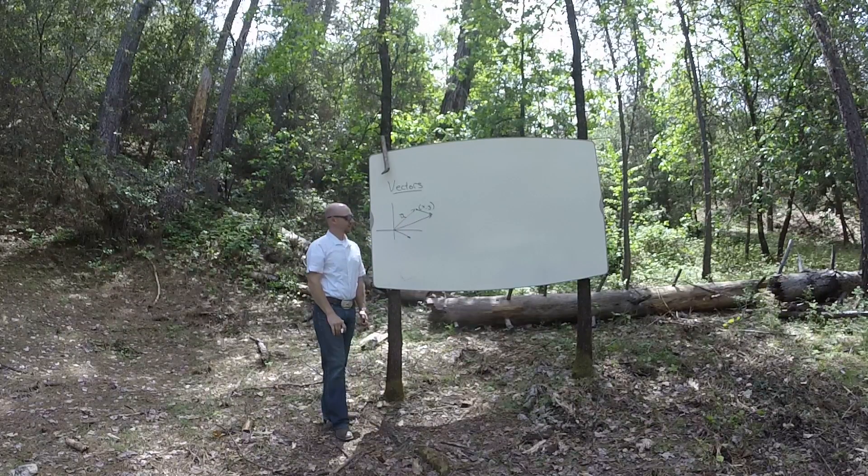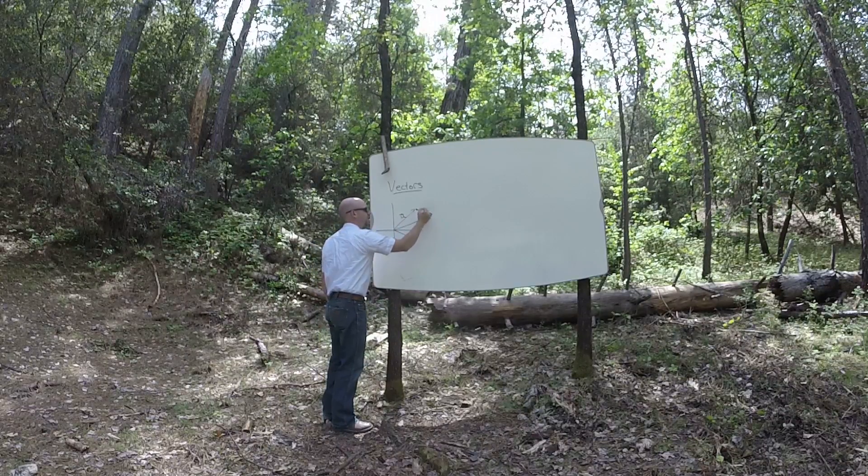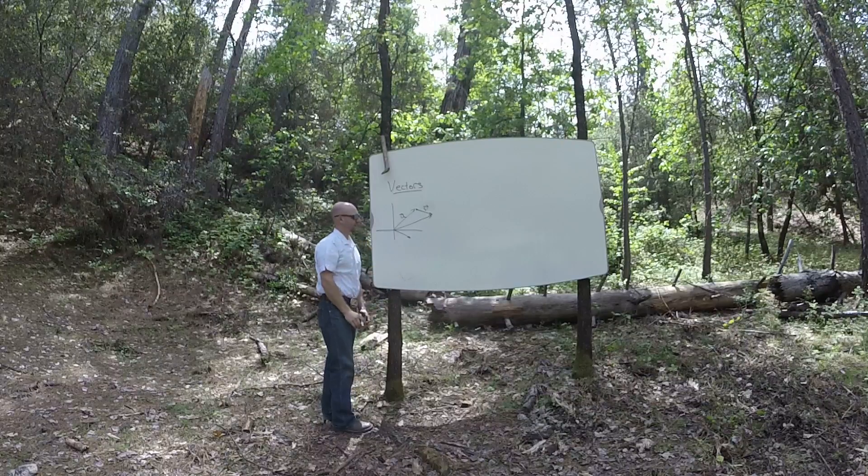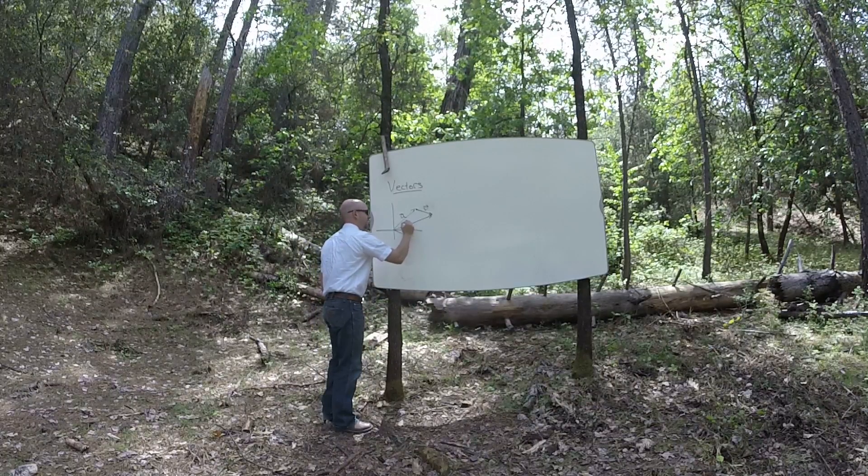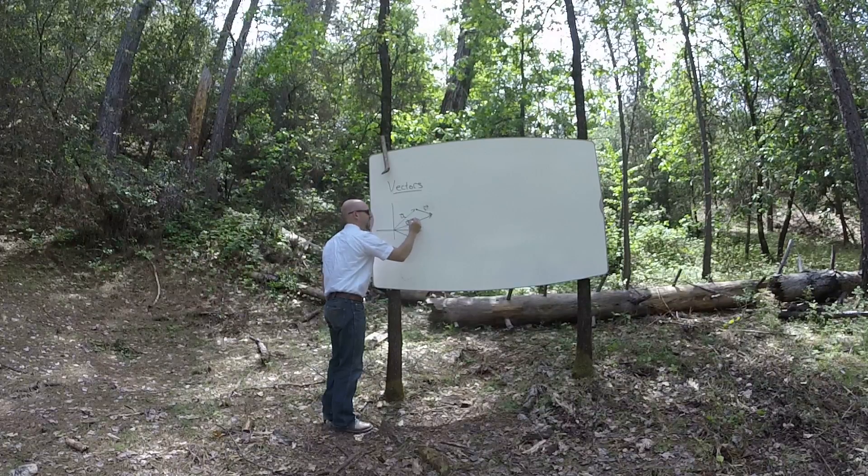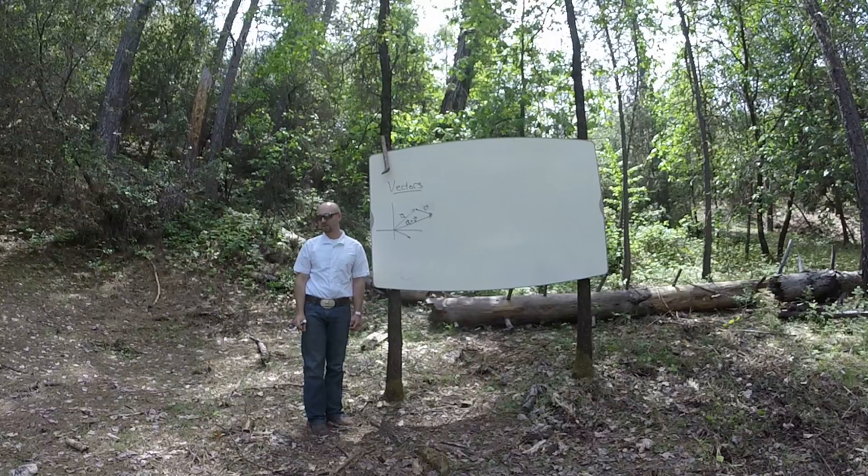So I'm going to say that vector there is called u. I'm going to call this vector here v. And yeah, I think we should call this vector u plus v. Yeah, and we could rename it w if we wanted to, right?